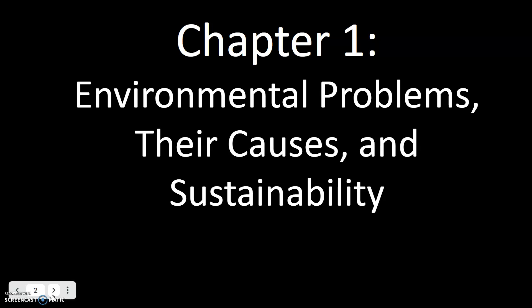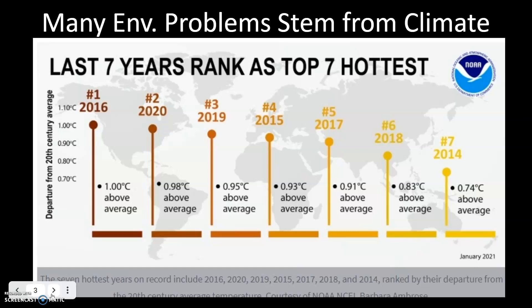I've been doing this class for about 10 years, and we've always talked about environmental science as something to be concerned about — potential problems, trends, and correlations we think are connected. This data from the last seven years shows that the seven hottest years on record just happen to be the last seven years. The top 10 are probably within the last 12 years. This is not a coincidence — it is absolutely a problem, and 2021 is on pace to be among the hottest years on record.